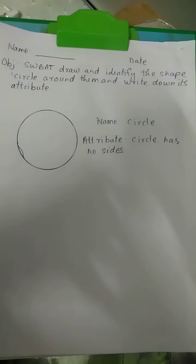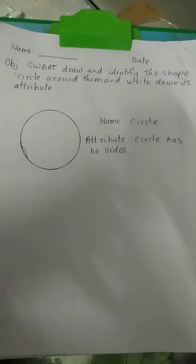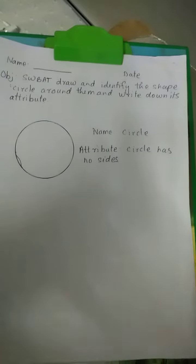Hello, good morning. Our objective for today is: the student will be able to draw and identify the shapes, circle around them, and write down its attributes. Okay? We will learn the shapes.